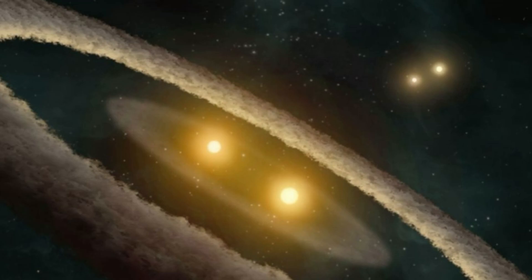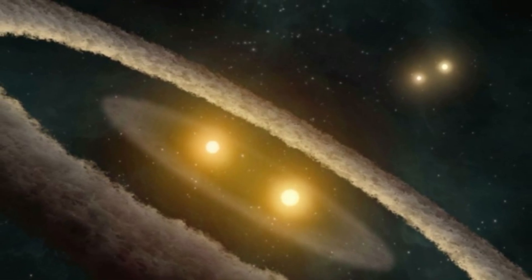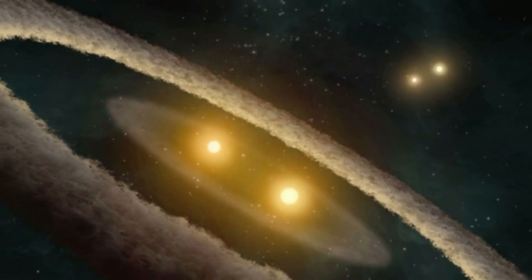However, TIC 470710327 stands apart from all the other known tertiary systems because of its size and shape. The stars are much more massive than the typical stars found within a tertiary system. As far as we know, it is the first of its kind ever detected.